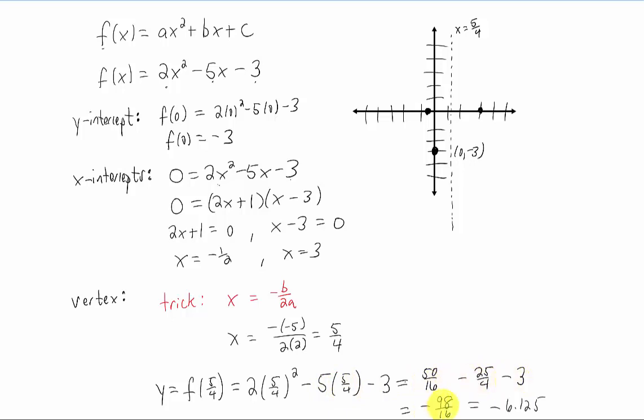Now, if we find a common denominator and add these three things together, we get negative 98 over 16, which actually does reduce, but it's approximately negative 6.125. So somewhere down here is our vertex, and it's five fourths, negative, let's see, 98 to 16th reduces to 49 eighths, which is a little bit less than negative six. Okay, great, so we can actually see what our parabola is basically going to look like. Beautiful drawing, and we're pretty happy with this problem.